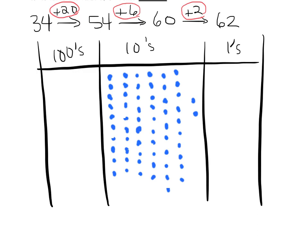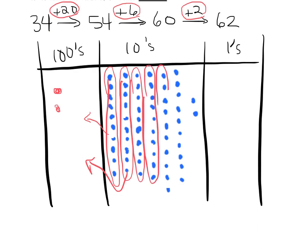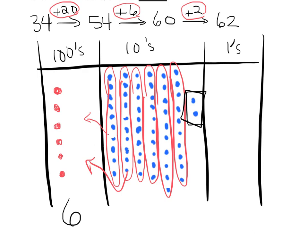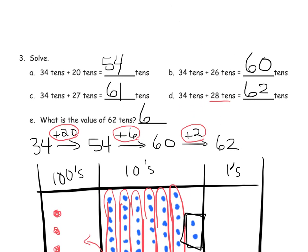And then we recall that any time you have 10, you can cash those 10 in for a single dot in the next column over. So these 6 sets of 10 get cashed in. So we now have 6 dots in the hundreds column and we have 2 leftovers in the tens column. So we have 6 in the hundreds, 2 in the tens, and nothing in the ones. So we can see that 62 tens is equal to 620.